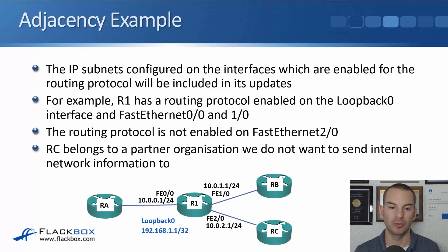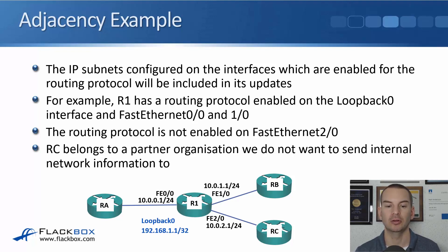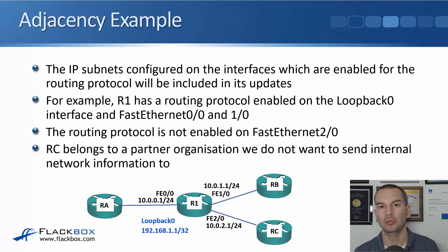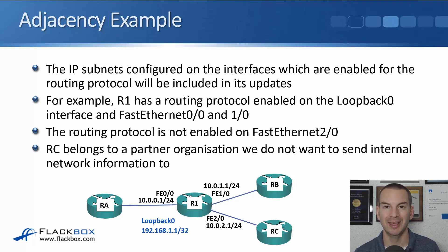In this adjacency example we have router R1 in the middle with RA, RB, and RC. R1 has a loopback configured with IP address 192.168.1.1/32. The routing protocol is enabled on loopback 0 and interfaces FastEthernet 0/0 and 1/0, but not on FastEthernet 2/0. The reason is that RC belongs to a partner organization — we need connectivity to them but don't want to send internal network information to them, as that would be a security issue.